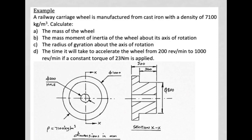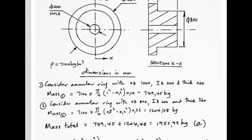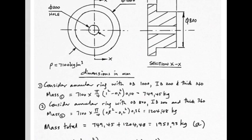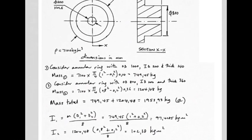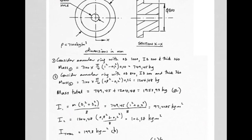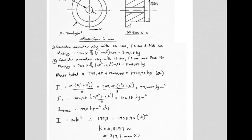Here's a similar example to attempt yourself. As before, find the mass of each piece: piece one is the annular ring with OD 1000 mm, ID 200 mm, thickness 140 mm; piece two has its own dimensions. The total mass of the whole rotating object is 1953.93 kg. The I of each piece is worked out the same way — 97 and 102 kg·m² respectively — totalling 199 kg·m², giving radius of gyration 319.7 mm.